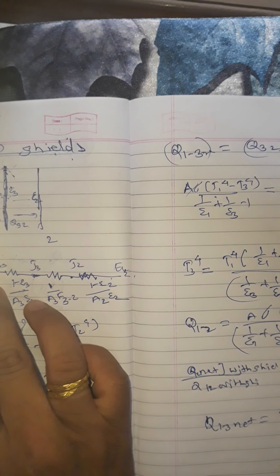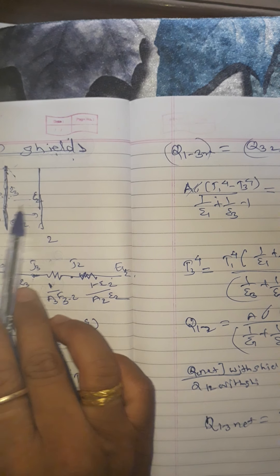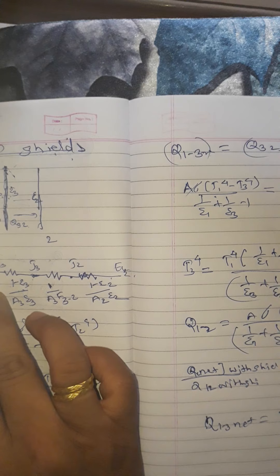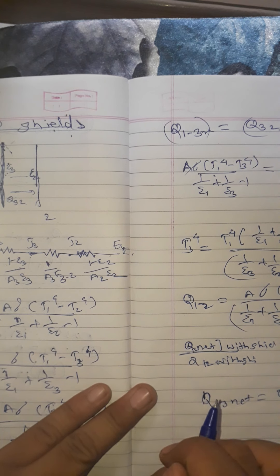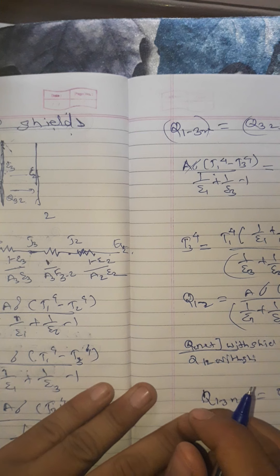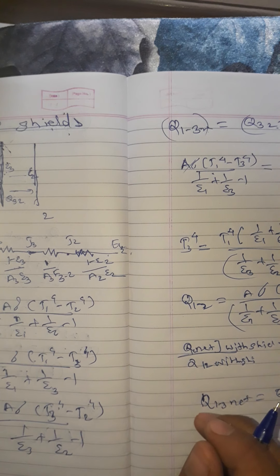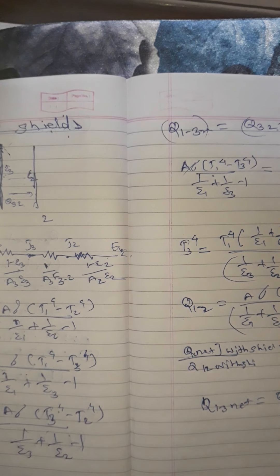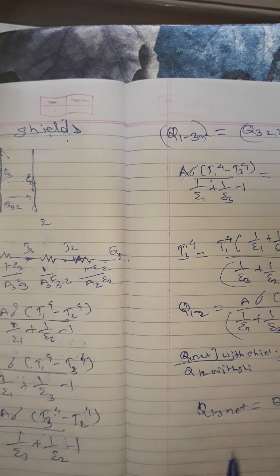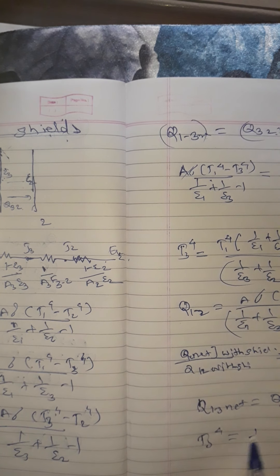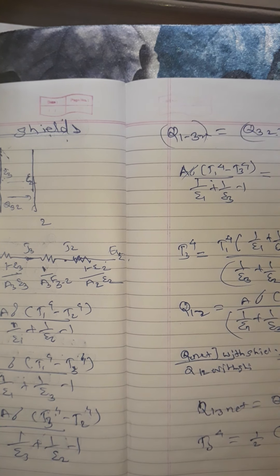Suppose 100% is the energy transferred and all emissivities are the same. So 50% goes from this surface and 50% from this surface — this is Q net. Thus, when one shield is inserted between two parallel surfaces, the direct radiation heat transferred between them is halved. The corresponding shield temperature T3 attains the value: T3 raised to 4 equals one-half times T1 raised to 4 plus T2 raised to 4. This is valid when both surfaces have the same emissivity.